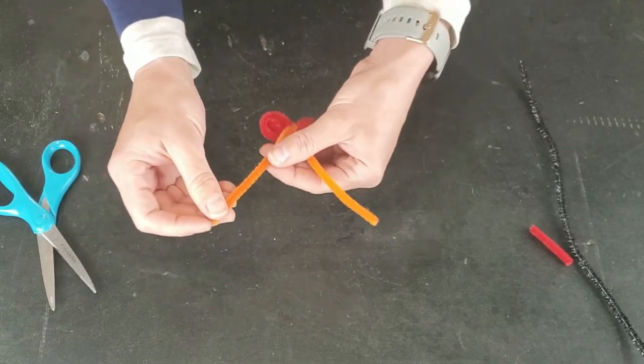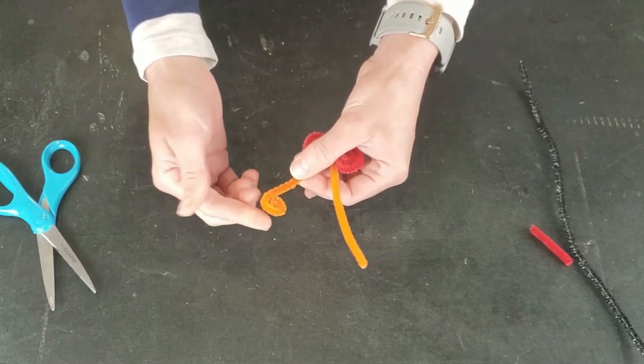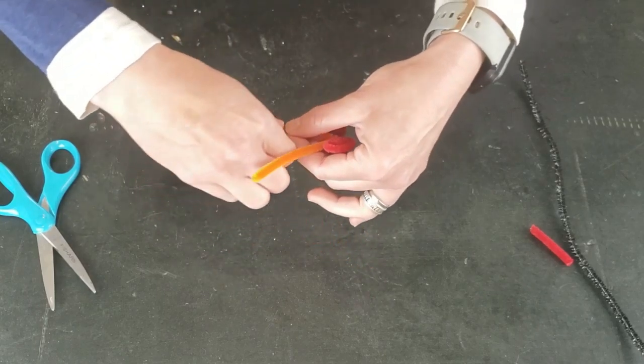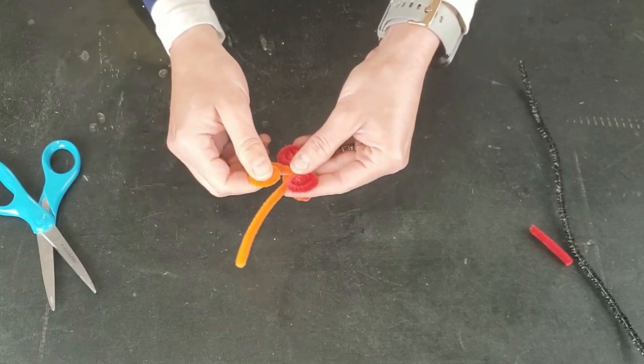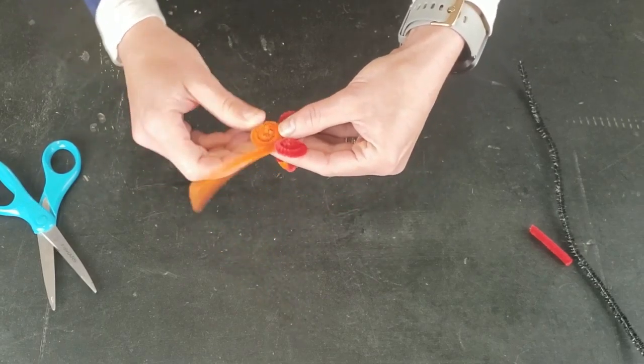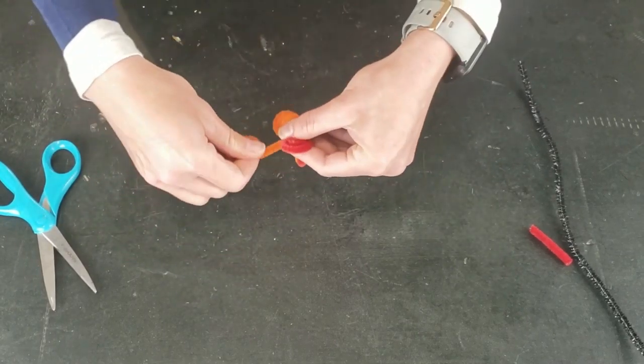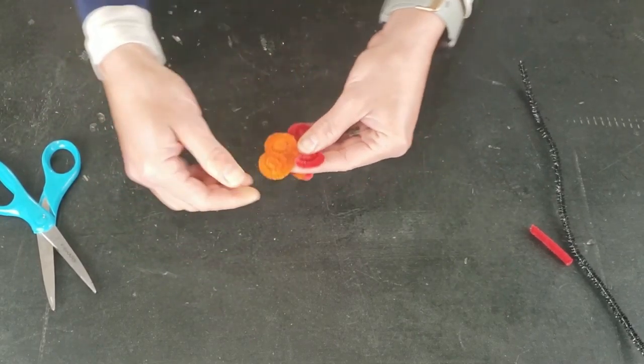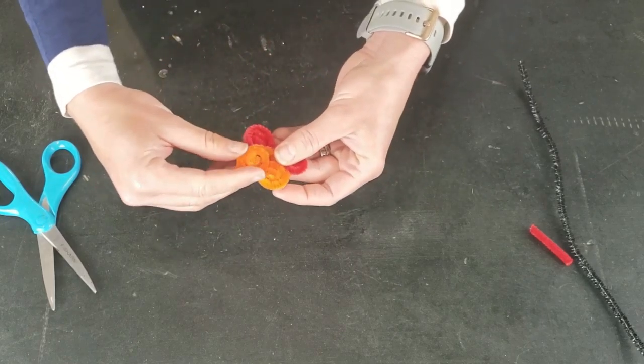And then we'll do the same thing on this side, so crimping it in toward itself and then using your fingers to roll it up until you get to the top. And then we're going to do the same thing with the other wings, so just crimping them in on each other, pinching it between both of your fingers to make a flat spiral all the way down to the center.